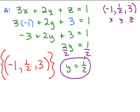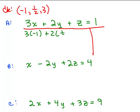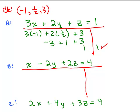Checking equation A: 3 times negative 1 plus 2 times one half plus 3 equals negative 3 plus 1 plus 3, which equals 1. That checks out. Checking equation B: plugging in negative 1 for X, one half for Y, and 3 for Z gives negative 1 minus 1 plus 6, which equals 4. That checks out too.